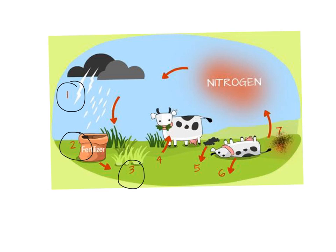This brings us to step four. At step four, animals eat the plants and they use the nitrogen inside the plants to build their own proteins and DNA.